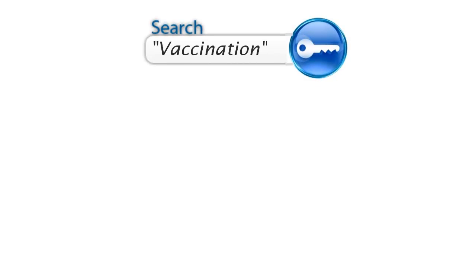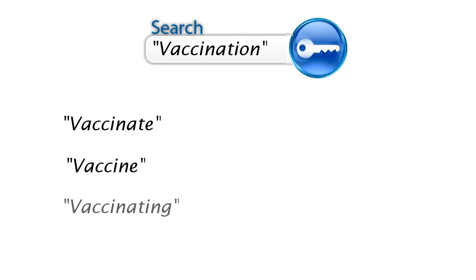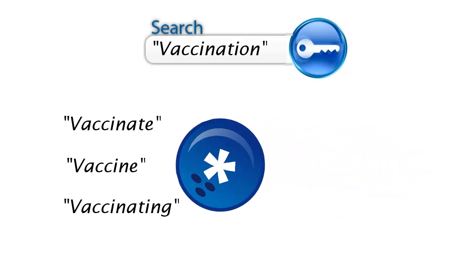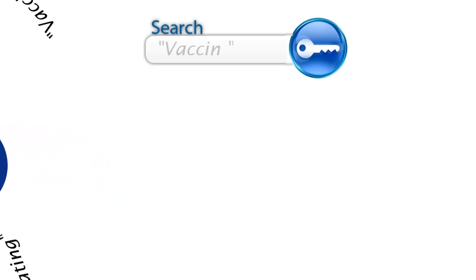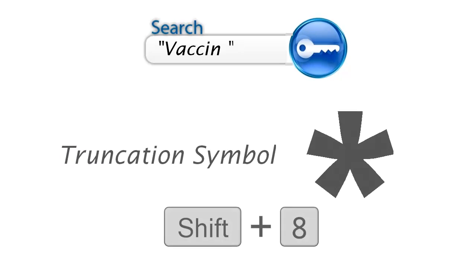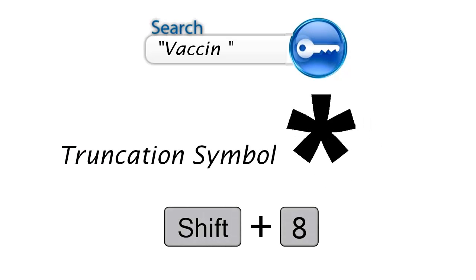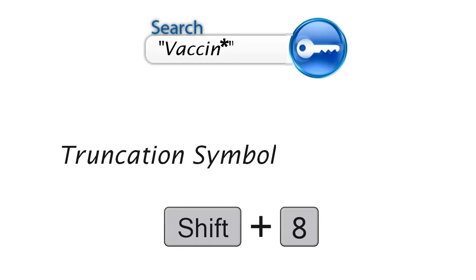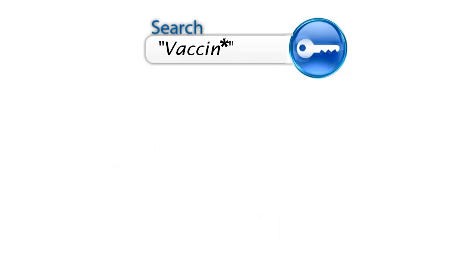Since keyword searching finds only exact instances of the term searched, it is important to consider all the different forms your search word could take. If performing a keyword search for 'vaccination,' it is reasonable to assume that we'd also be interested in the terms vaccinate, vaccine, and vaccinating, as well as their plural forms. We can ensure these results by appending an asterisk to the root word 'vaccine' in a process called truncation. This tells the database that the keyword can be finished in any way, allowing for more complete retrieval in a single search.